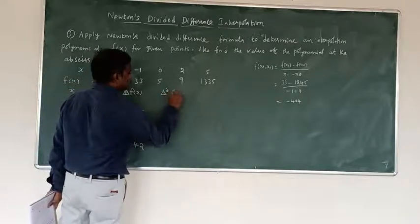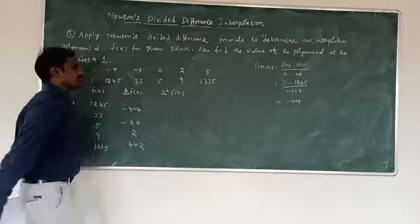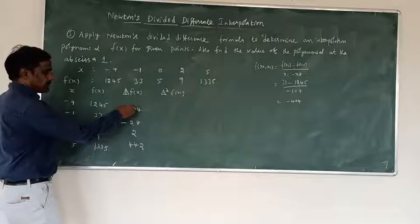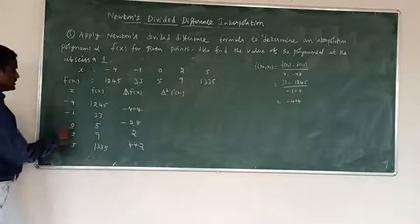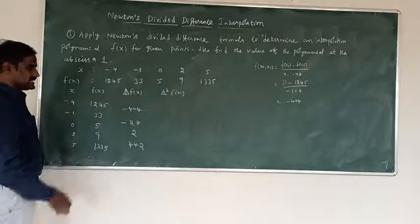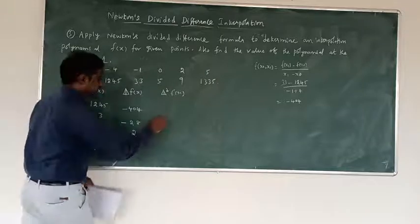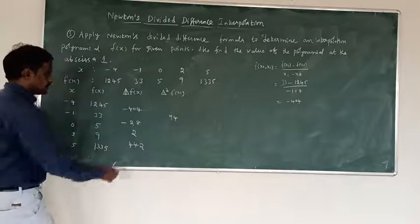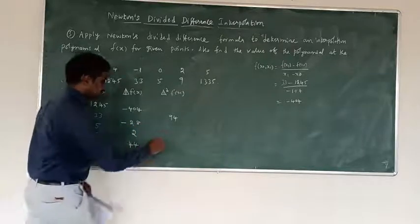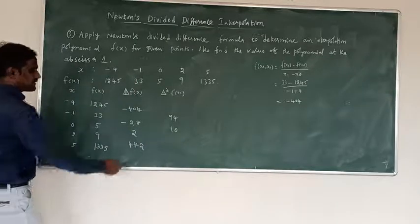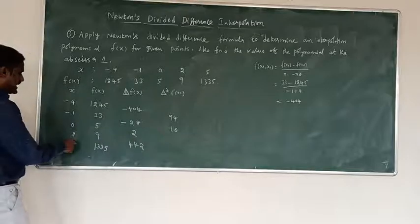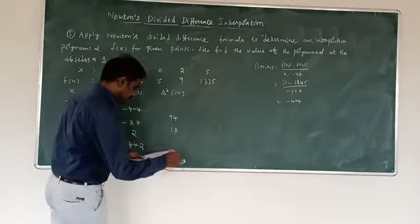Now to find out the second divided difference. For the first: minus 28 minus minus 404, divided by 0 minus minus 4, result is 94. Next, the difference between the next two values divided by 2 minus minus 1, result is 10. Then the difference between 442 and 2 divided by 5 minus 0, result is 88.